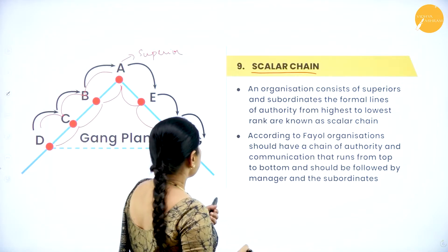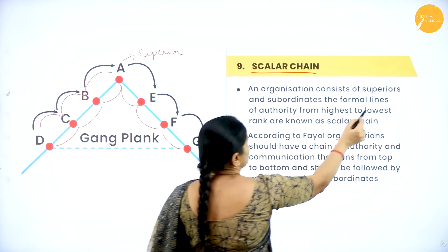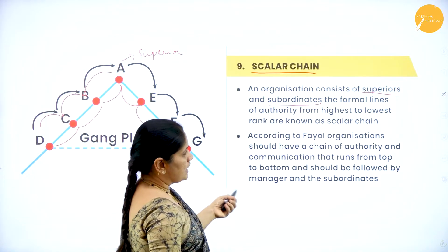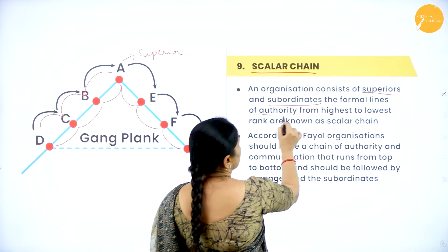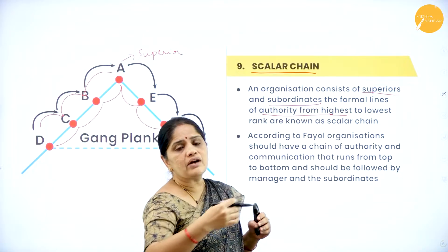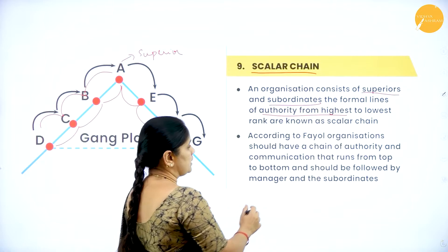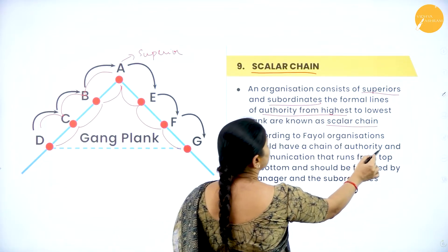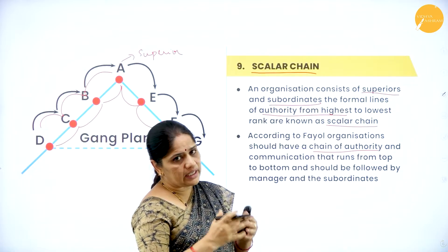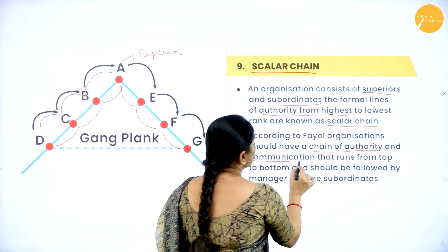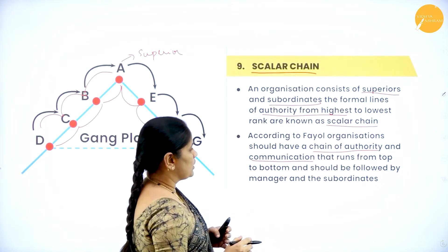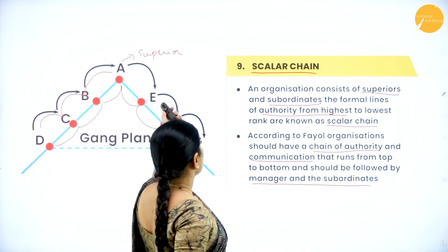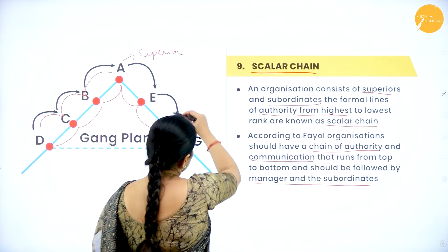An organization consists of superiors and subordinates. There are formal lines of authority from the highest to the lowest — this is called the scalar chain. According to Fayol, communication that runs from top to bottom should be followed by both managers and subordinates. Whatever the topmost superior wants to communicate to subordinates should come through this same formal arrangement.